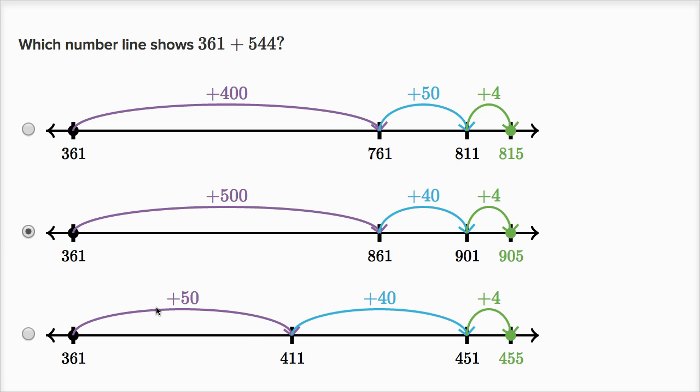This one over here, instead of adding 500, you add 50, which doesn't make sense because we're clearly adding 500s, four tens, or 40, and then four ones. Let's do some more examples.